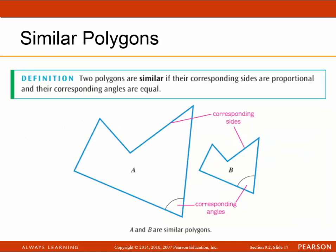Next, we're going to talk about similar polygons. Two polygons are similar if the corresponding sides are proportional and the corresponding angles are equal. Looking at the corresponding angles and corresponding sides shown, polygons A and B are similar polygons.